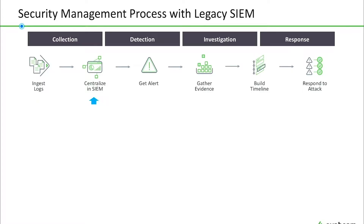Logs are ingested and centralized into a SIM. Then a security alert fires, either from a security tool or from a fact-based correlation rule. Next, a security analyst investigates the alert by querying their SIM to gather evidence and build an incident timeline. Once the timeline is built, the analyst will know the scope and impact of the incident.